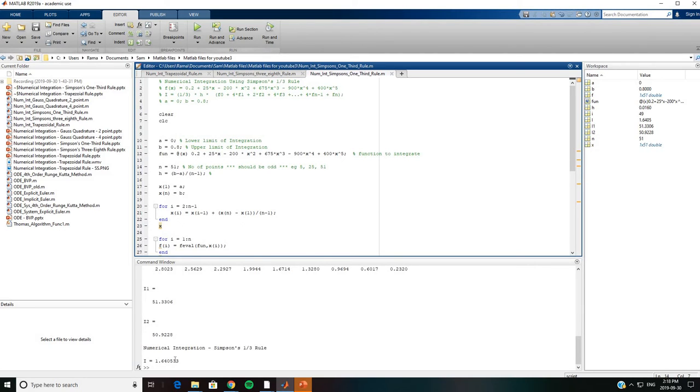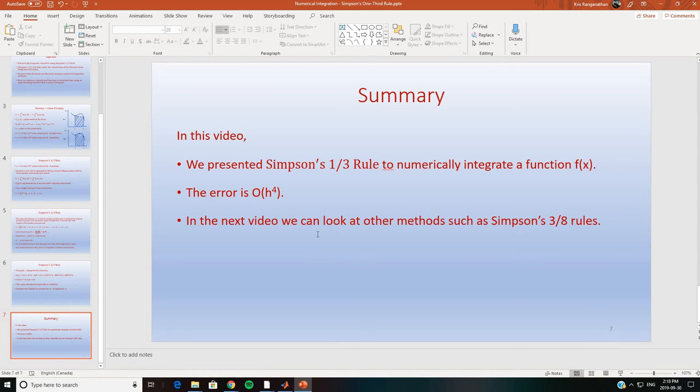To summarize, in this video we presented Simpson's one-third rule to numerically integrate a function f(x). The error is of the order of h^4. In the next video we can look at other methods such as Simpson's three-eighths rule. Thanks for watching the video. I will be posting the code on a website and provide the information in the YouTube. If you have any comments or questions please post them. Thanks for watching.